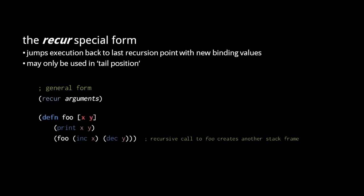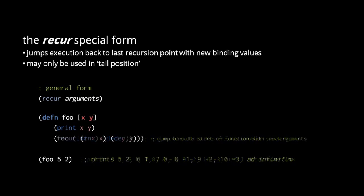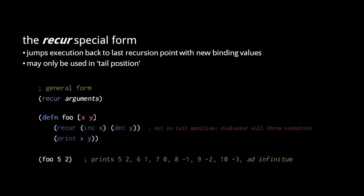In this example, each call to foo prints its arguments, then foo makes a recursive call in which x has a value that is 1 greater and y has a value that is 1 lesser. So if we call foo with the values 5 and 2, we will see printed 5/2, then 6/1, then 7/0, then 8/-1, and so on. Because this function makes infinite recursive calls, it will eventually trigger a stack overflow. We can fix this problem by simply replacing the call with recur. Now each recursive call reuses the same stack frame, and so our function will recursively iterate forever without triggering a stack overflow. Be clear that recur may only be used in tail position — a recur not in tail position would be rejected by the evaluator.